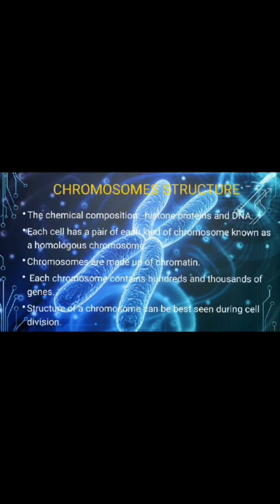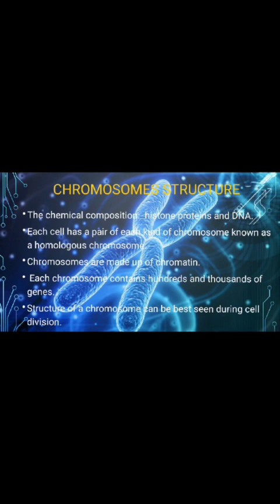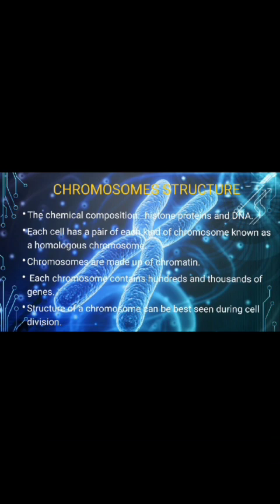The structure of chromosomes: the chemical composition of a chromosome is histone protein and DNA. Each cell has a pair of each kind of chromosome, known as homologous chromosomes. Chromosomes are made up of chromatin, which contains a single molecule of DNA and associated protein. Each chromosome contains hundreds and thousands of genes that precisely code for several proteins in the cell.